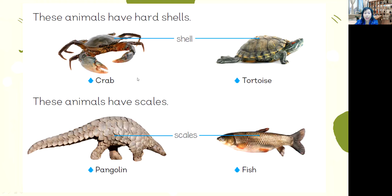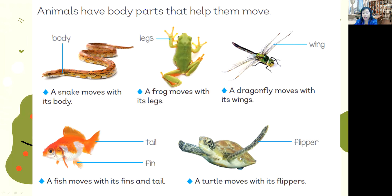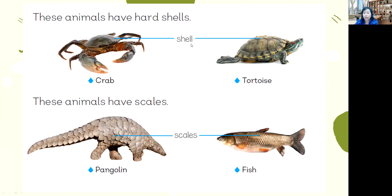Other animals have shells that cover their body, like the crab — a crab has a shell. A tortoise or turtle also has a shell that protects their body. Other animals like the pangolin have shells too. And fish have scales — they belong to the fish group.